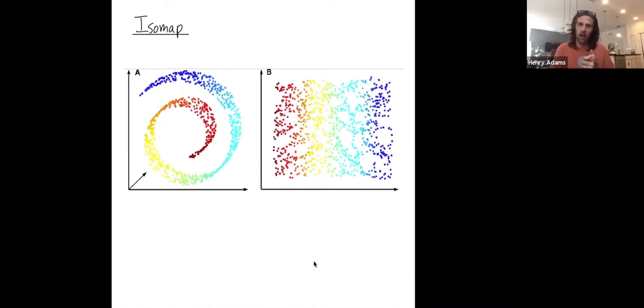So let me contrast ISOMAP with linear dimensionality reduction techniques, first of all, such as principal component analysis or PCA. So imagine this is your data set, the so-called Swiss roll data set.